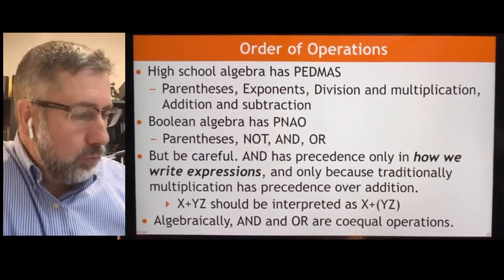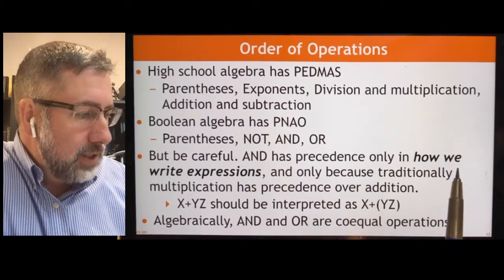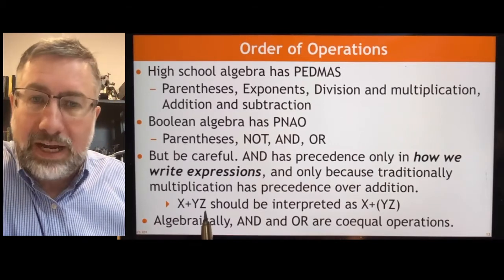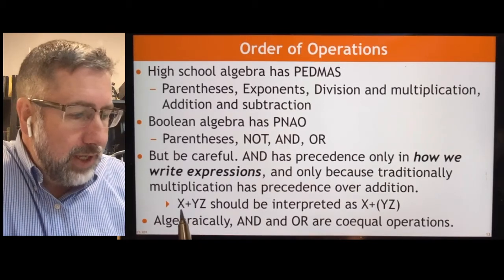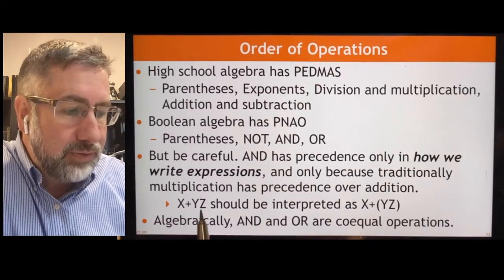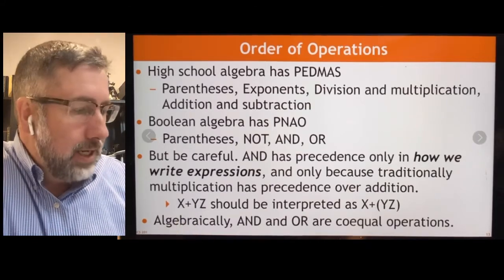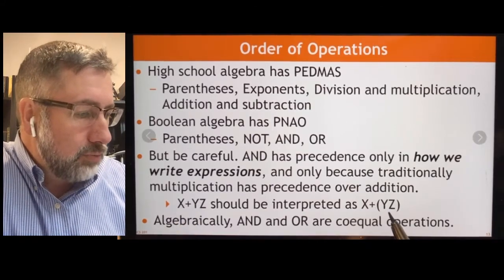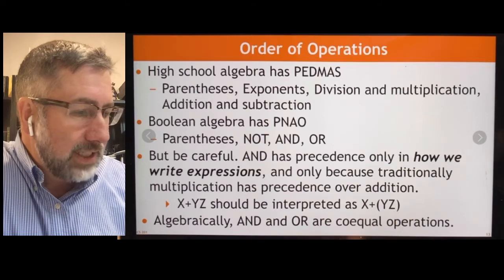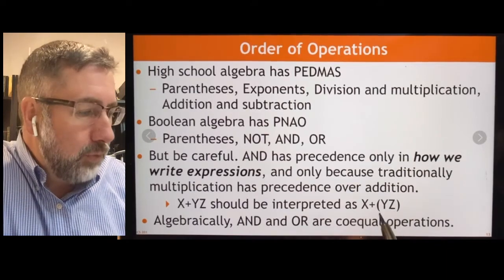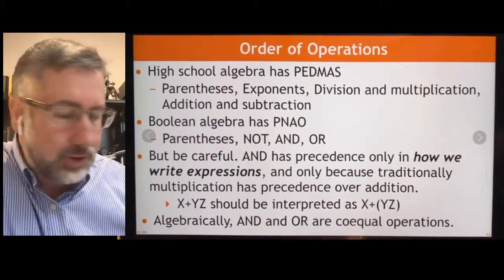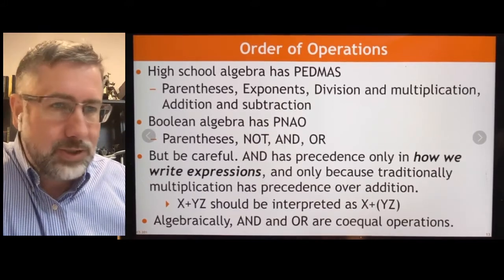Now by convention, we do say that AND has precedence, but only in the way we write expressions. So if we have x or y z, we do the y z first, and then we or it with the x. But that should actually be written as x or parentheses y z like this, if you want to be really clear. So be very careful about this. Because AND and OR are actually co-equal.